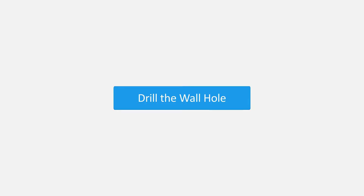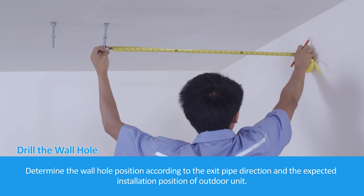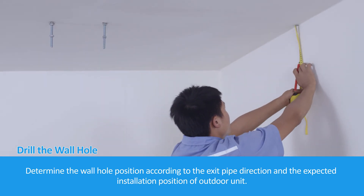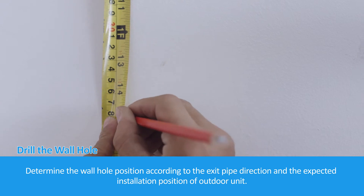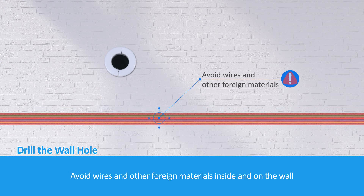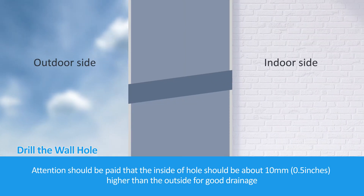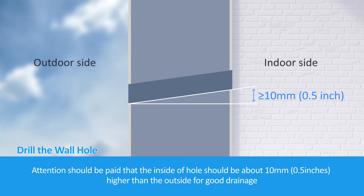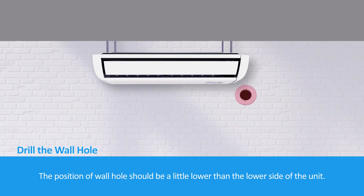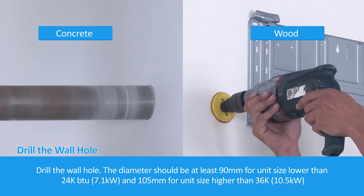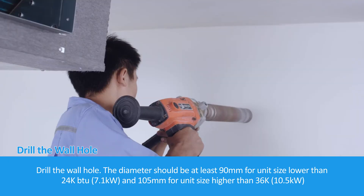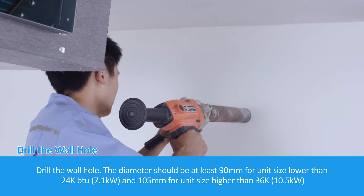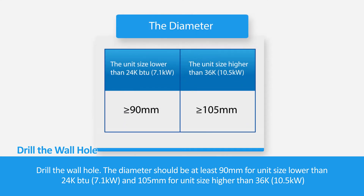Drill the wall hole. Determine the wall hole position according to the exit pipe direction and the expected installation position of the outdoor unit. Avoid wires and other foreign materials inside and on the wall. The inside of the hole should be about 10mm (0.5 inches) higher than the outside for good drainage. The wall hole position should be slightly lower than the lower side of the unit. The diameter should be at least 90mm for units below 24,000 BTU, and 105mm for units above 36,000 BTU (10.5 kW).